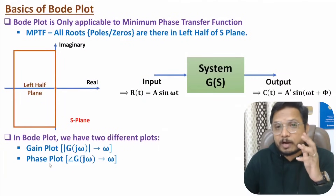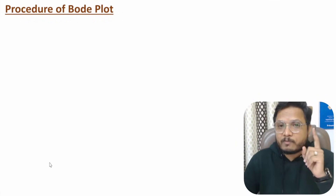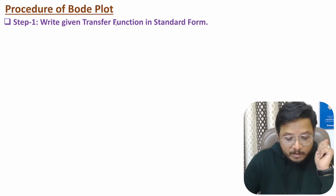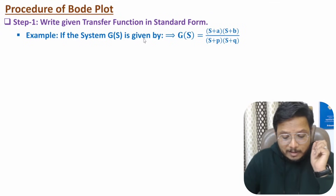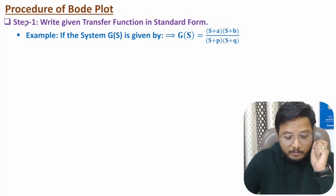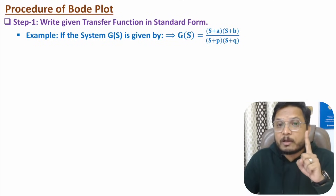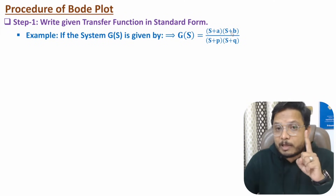Now the procedure of Bode plot involves two plots: gain plot and phase plot. For the gain plot, the first step is to write the given transfer function in standard form. For example, given G(s) = (s+a)(s+b) / (s+p)(s+q), we need to represent this in standard form where all roots are in the form of (1 + s/something).